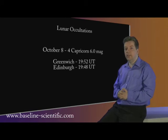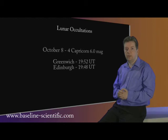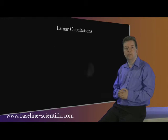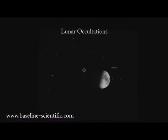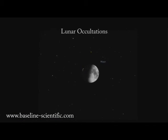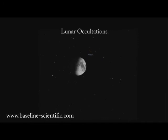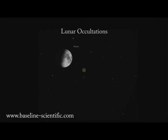On the evening of the 8th, the 6th magnitude star 4 Capricorn will be occulted at 1952 UT, or about 10 to 9. This is about half an hour after astronomical twilight, so should be a good late evening observation to start the month with.